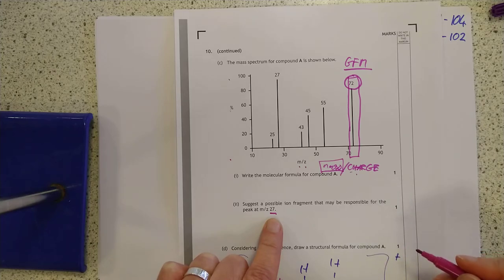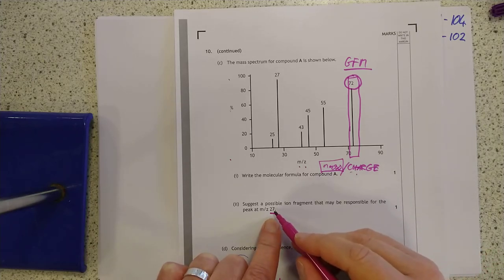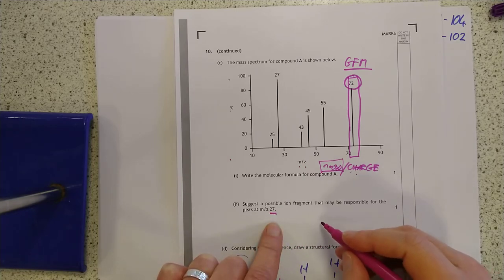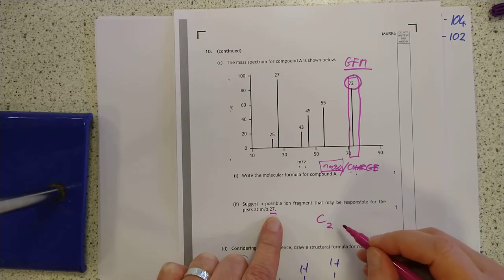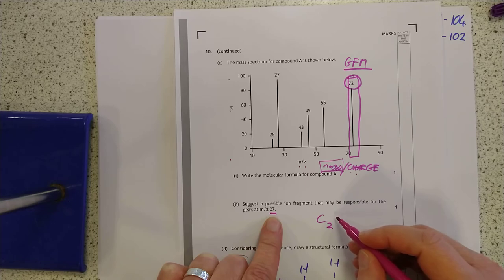Well, if you're seeing C's and H's and O's and stuff like that, you can try jiggling about a variety of combinations until you can come up with a certain chunk that would have a GFM of 27. I'm seeing two carbons there, 24. C2, which leaves you with three H's. So basically, something like that.